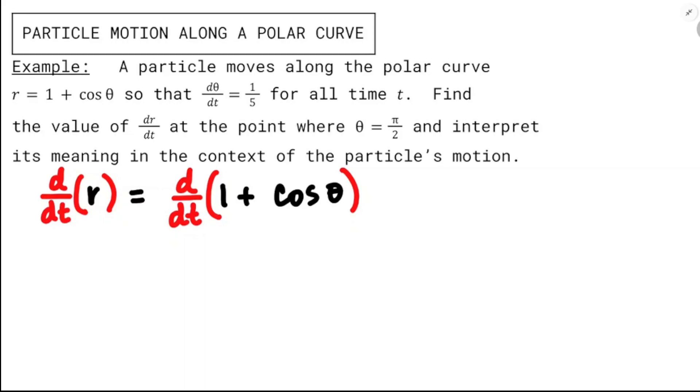So the derivative of r is dr/dt, and that's going to be equal to the derivative of 1, which is still 0 with respect to anything, plus the derivative of cosine θ, which is negative sine θ, and then we have to assume θ depends on t, so we'll multiply by dθ/dt for the chain rule.